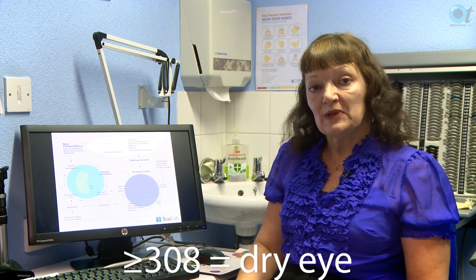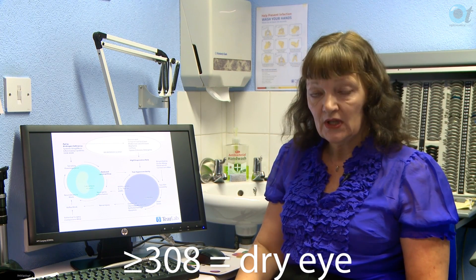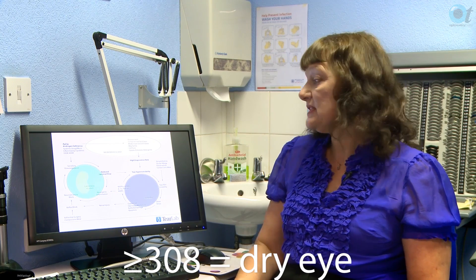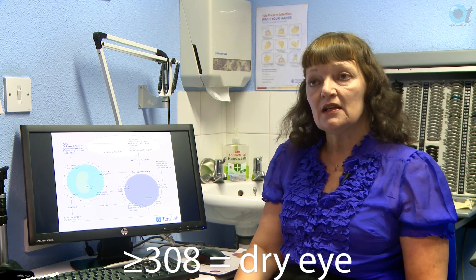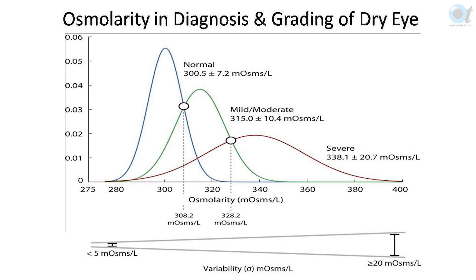If a patient has an osmolarity reading of between 300 and 307, that's normal. The magic number to remember with tear osmolarity is 308, because that's when they start to be marginally dry-eyed. A reading of up to 307 is normal or wet. 308 to 320 is mild dry eye, 320 to 340 is moderate dry eye, and over 340 is severe dry eye.